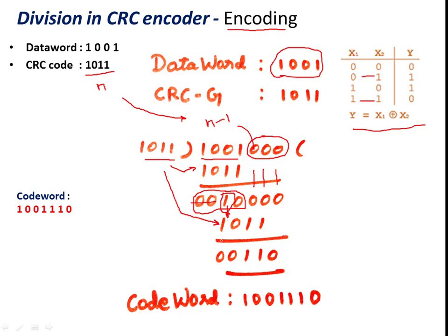Here again we have 1011 and performing XOR gives us 0011, then bring down the final 0. So the remainder at this stage is 00110. Dropping the leading zeros, the remainder is 110 — a 3-bit value. We cannot proceed further with the CRC division, so 110 is the remainder. The code word is the data word 1001 plus the remainder 110.